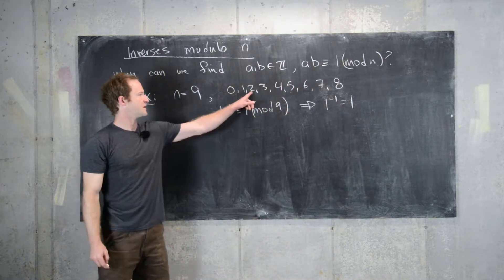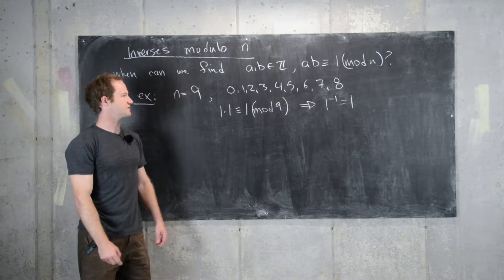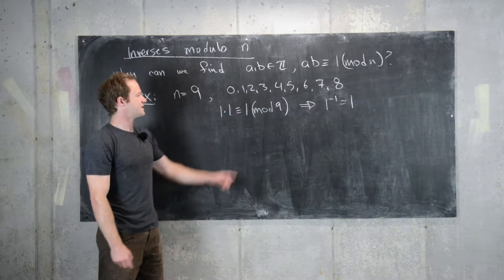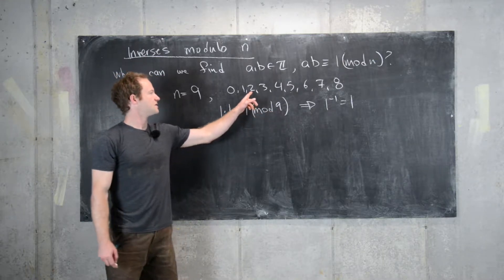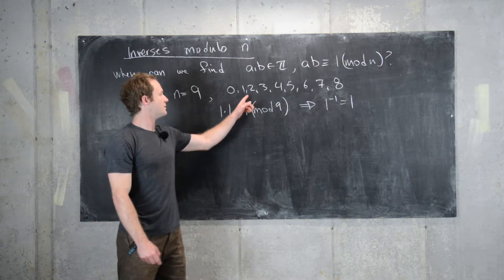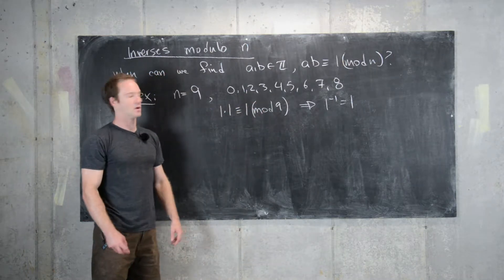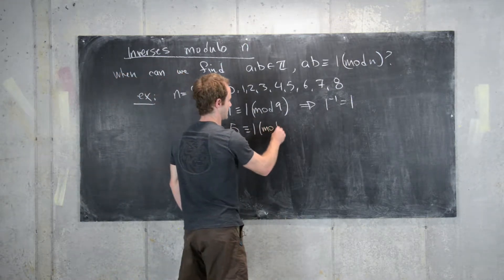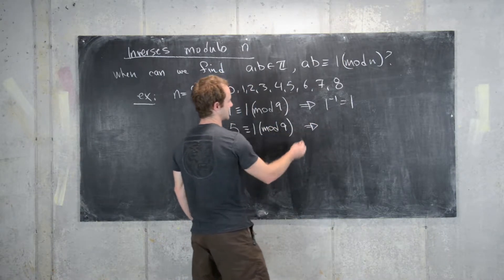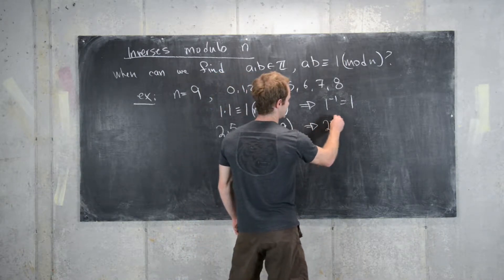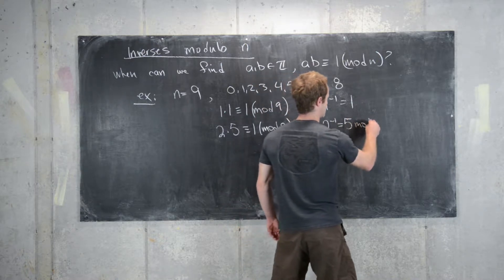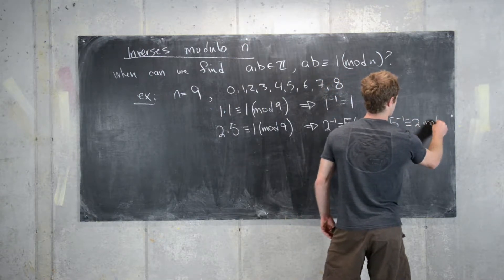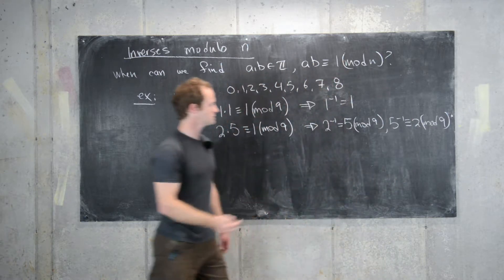Now let's look at 2. So if we multiply 2 by any of these residues modulo n, let's see if we ever get 1. So 2 times 3 is 6, that's not 1 mod n. 2 times 4 is 8, that's not 1 mod n. But 2 times 5 is 10, which is 1 mod n. So here we have 2 times 5 is congruent to 1 mod n. And so that's equivalent to saying that 2 inverse is equal to 5 mod n. And likewise, 5 inverse is congruent to 2 mod 9.